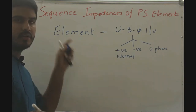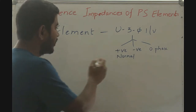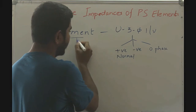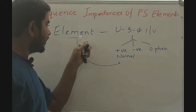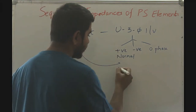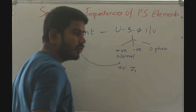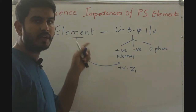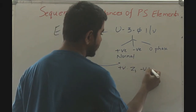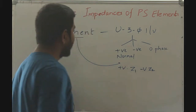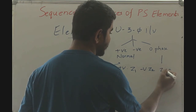Each element or circuit in the power system will offer a different impedance to a different sequence current. The impedance offered by the element to the positive sequence current is called the positive sequence impedance, with subscript 1. The impedance to the negative sequence current is the negative sequence impedance, with subscript 2. The impedance to the zero phase sequence current is the zero phase sequence impedance.